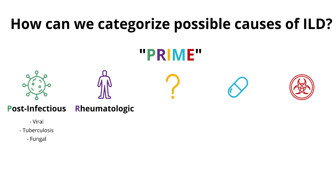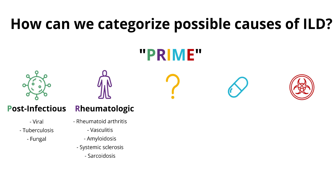Number two: rheumatologic. Could their ILD be associated with a systemic disorder such as rheumatoid arthritis, a vasculitis, amyloidosis, systemic sclerosis, or sarcoidosis?